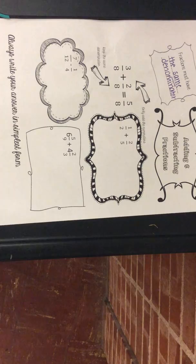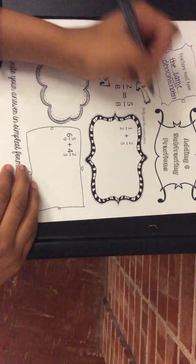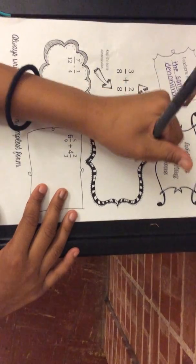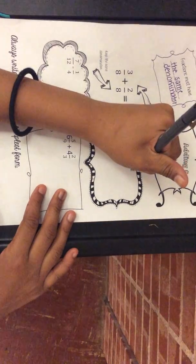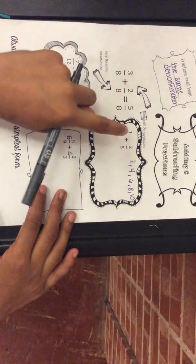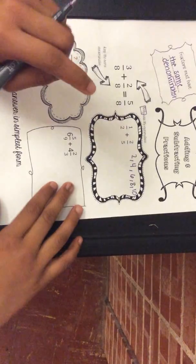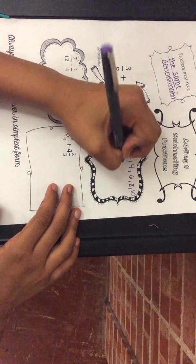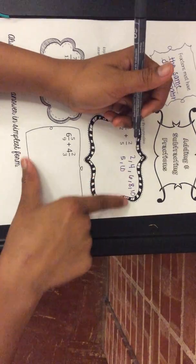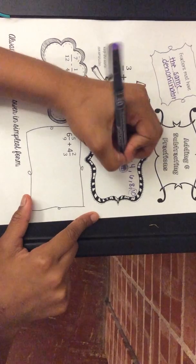First, you need to make sure that they have the same denominator. Count out all the numbers until you find the least common multiple — the least amount that is the same for both numbers. So let's use the denominators two and five. You're going to count by twos and fives: two, four, six, eight, ten and five, ten — both reach ten.